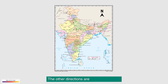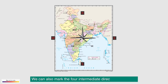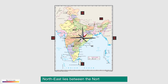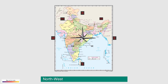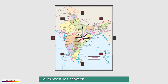The other directions are then easy to find. We can also mark the four intermediate directions on a map. North-East lies between the North and the East. North-West is between the North and the West. South-East is between the South and the East, and South-West lies between the South and the West.